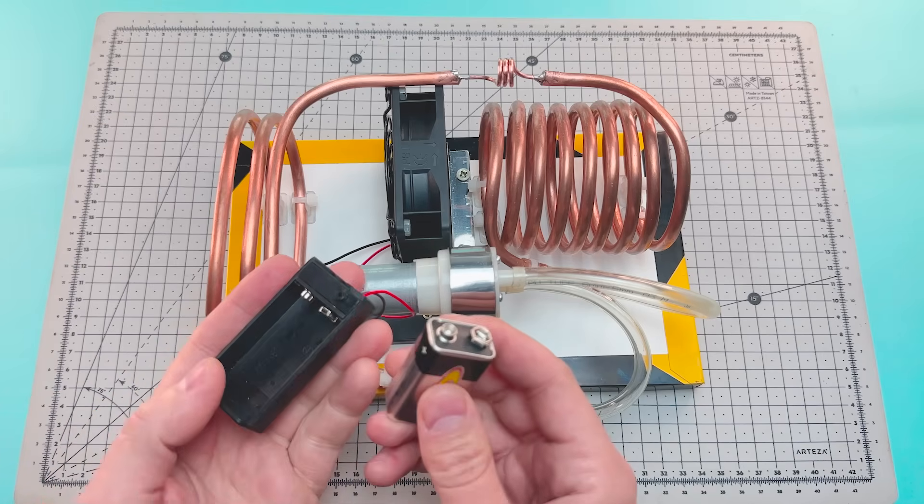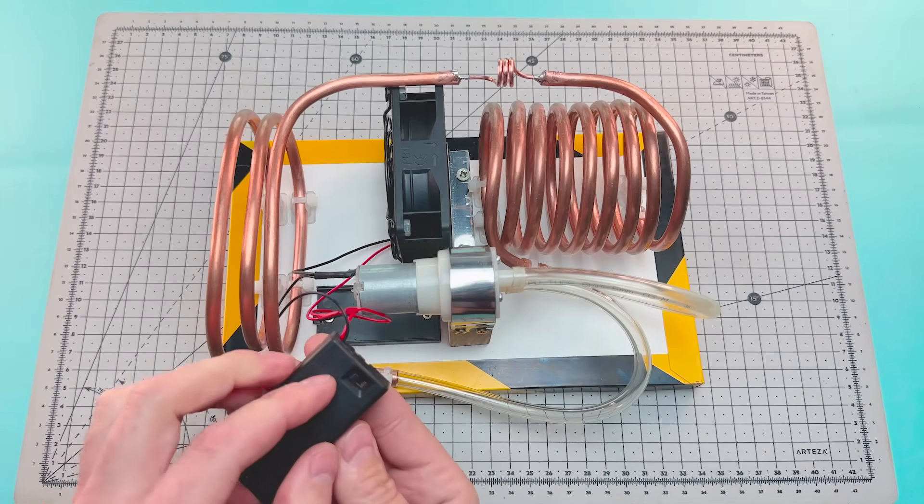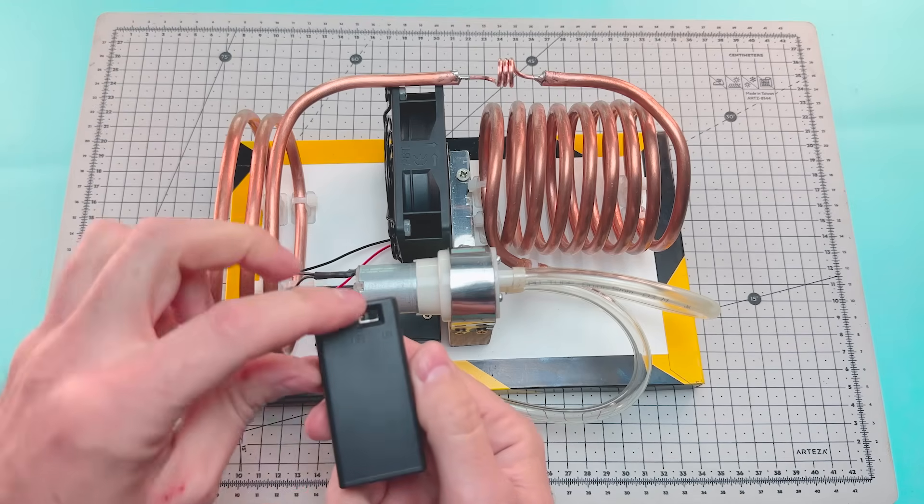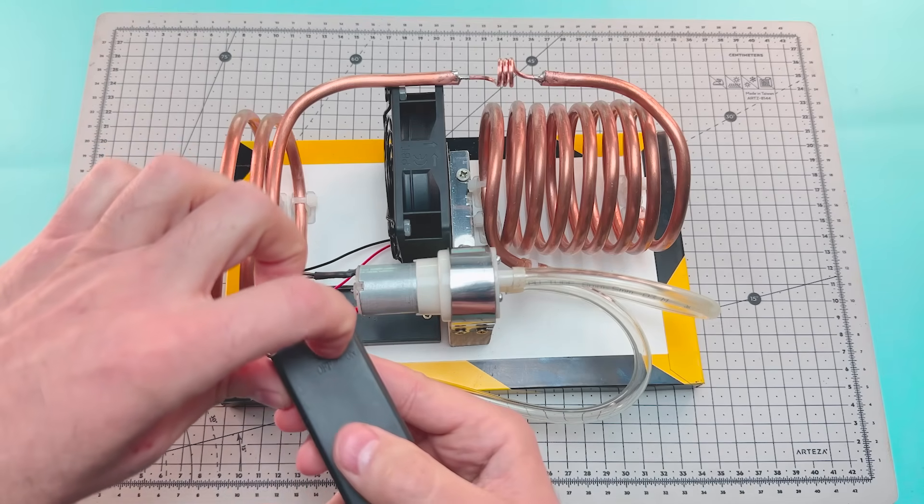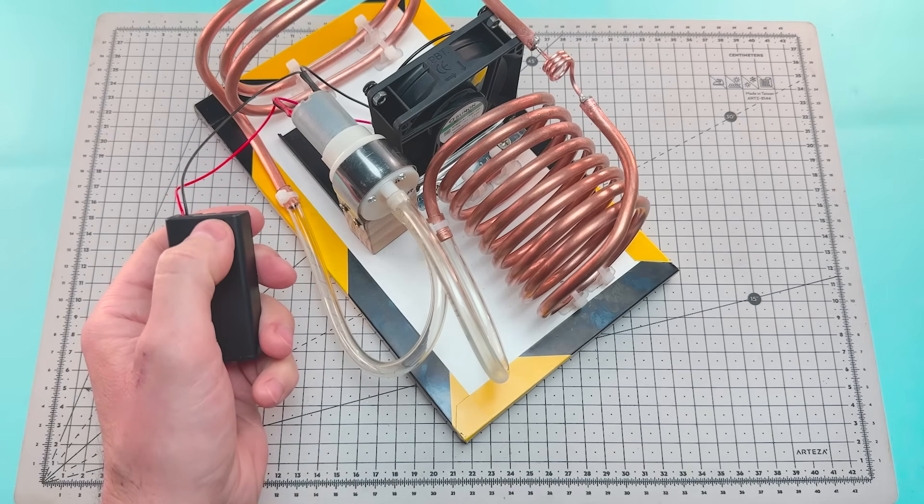With this small 9-volt battery, it will be enough to start up our portable air conditioner, and we'll be able to cool off during the hot summer nights. We check if it works, and yes, the pump activates when we turn on the battery.